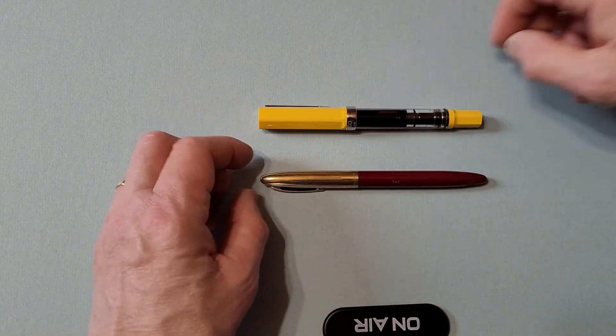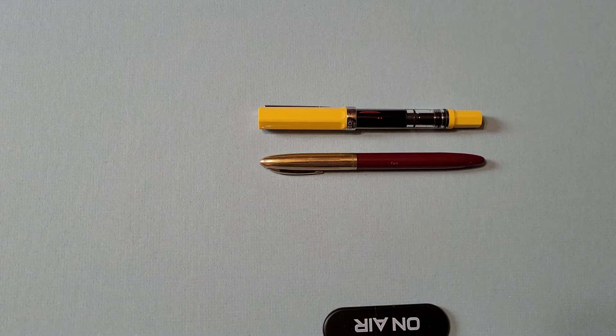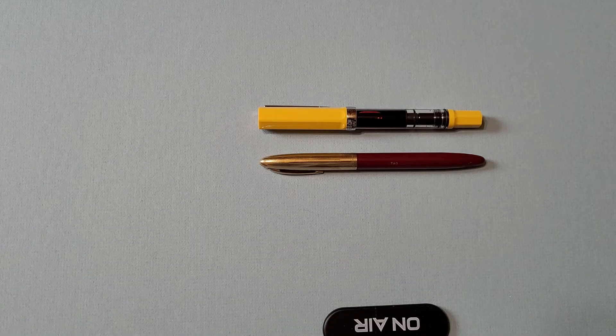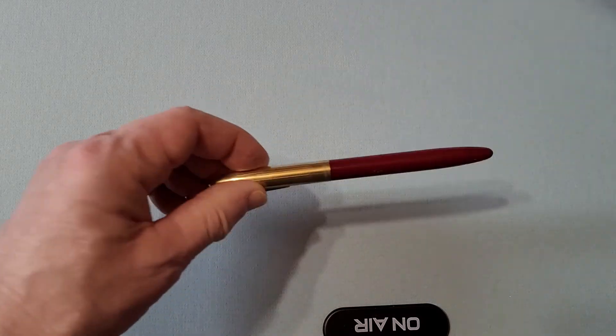In comparison to, say, a Twsbi Echo, it's roughly the same size, but it's a lot thinner. Vintage pens tend to be of the thinner scale in many cases.